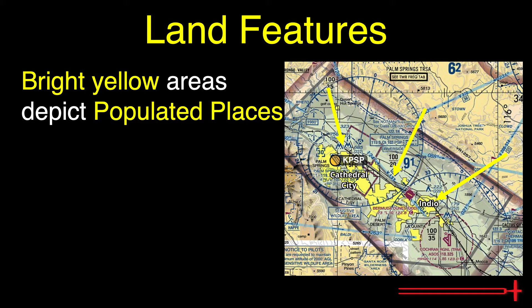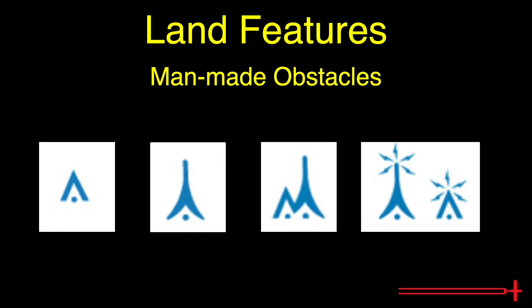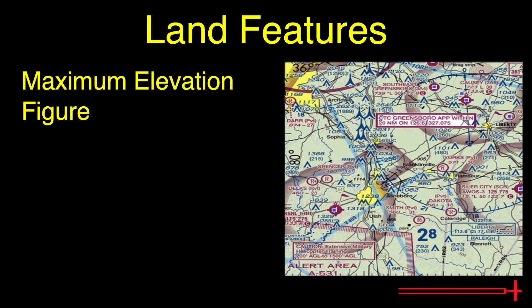Bright yellow areas on the charts depict populated places. These patterns of yellow also match closely to the city lights you'd see from the air at night. Man-made obstacles are depicted by one of four symbols depending on type and altitude. The maximum elevation figure, or MEF, for each quadrant is depicted as a large, bold blue number — altitude in thousands of feet shown by the large number and hundreds by the small. For example, here we have 2,800 feet.